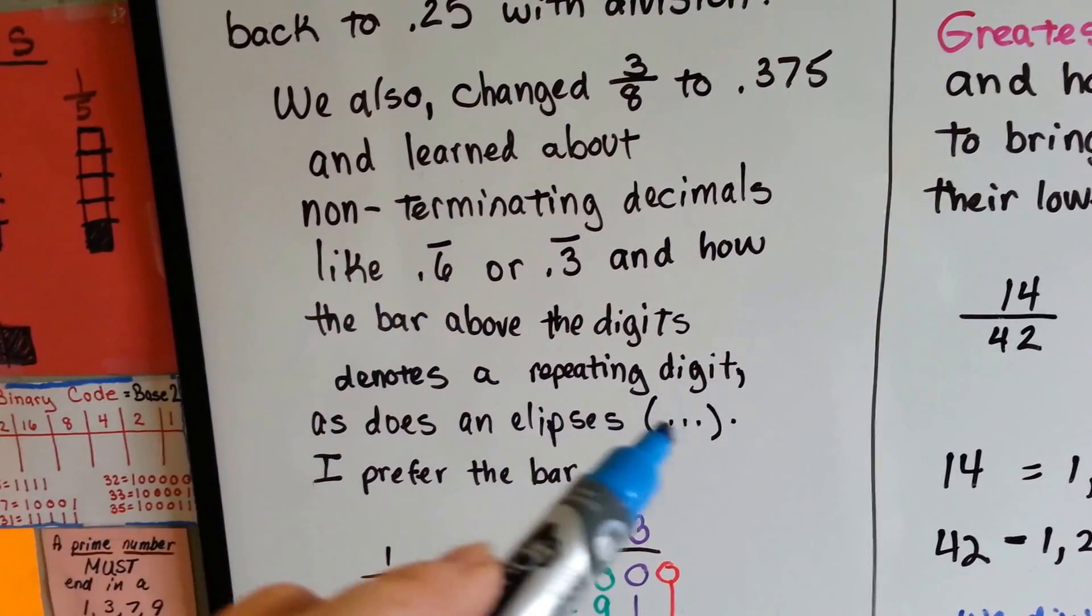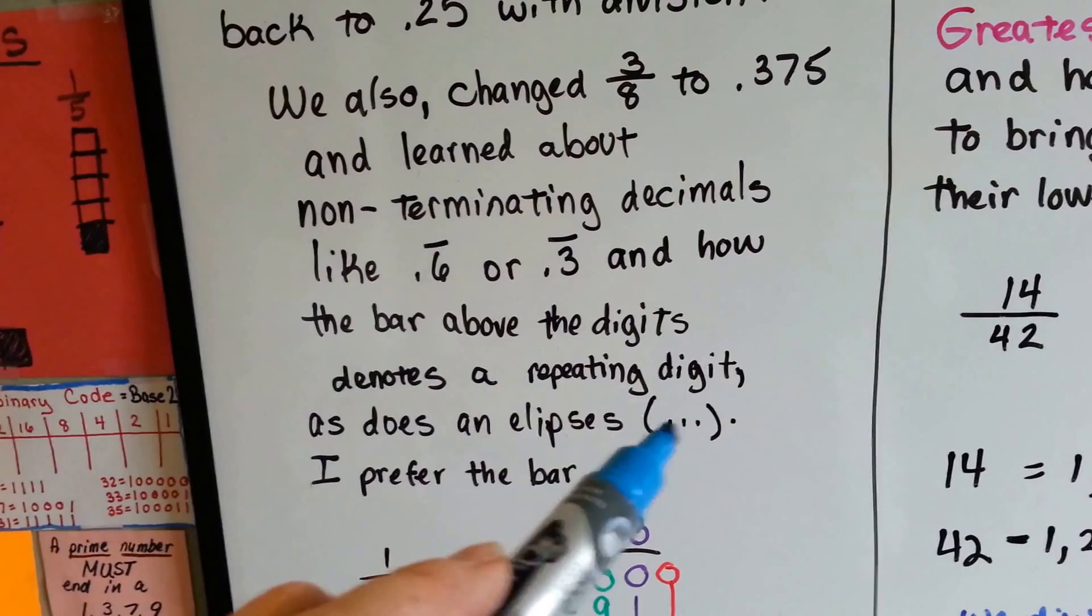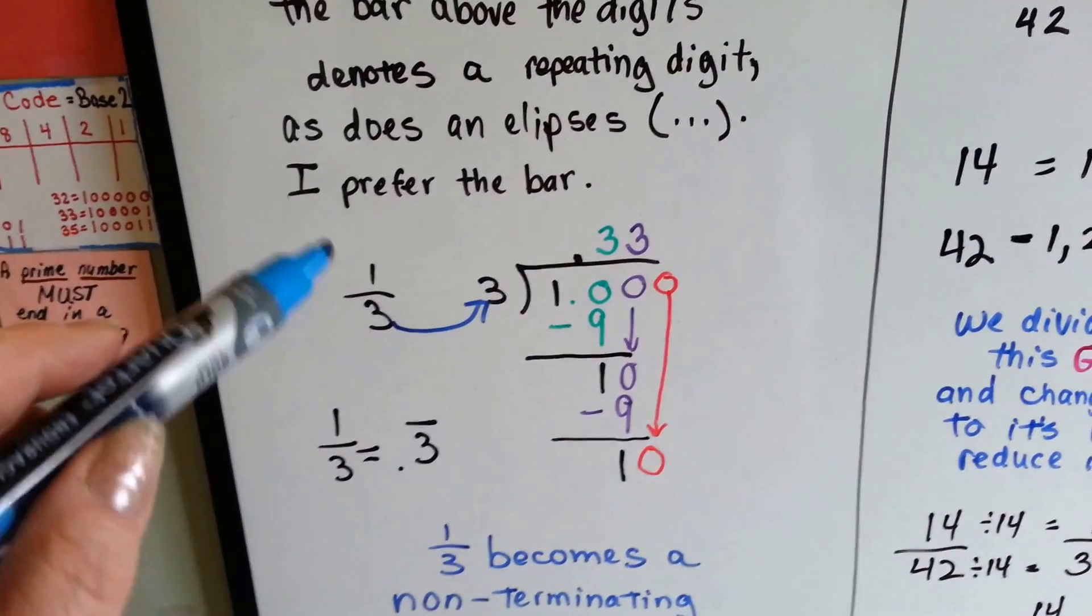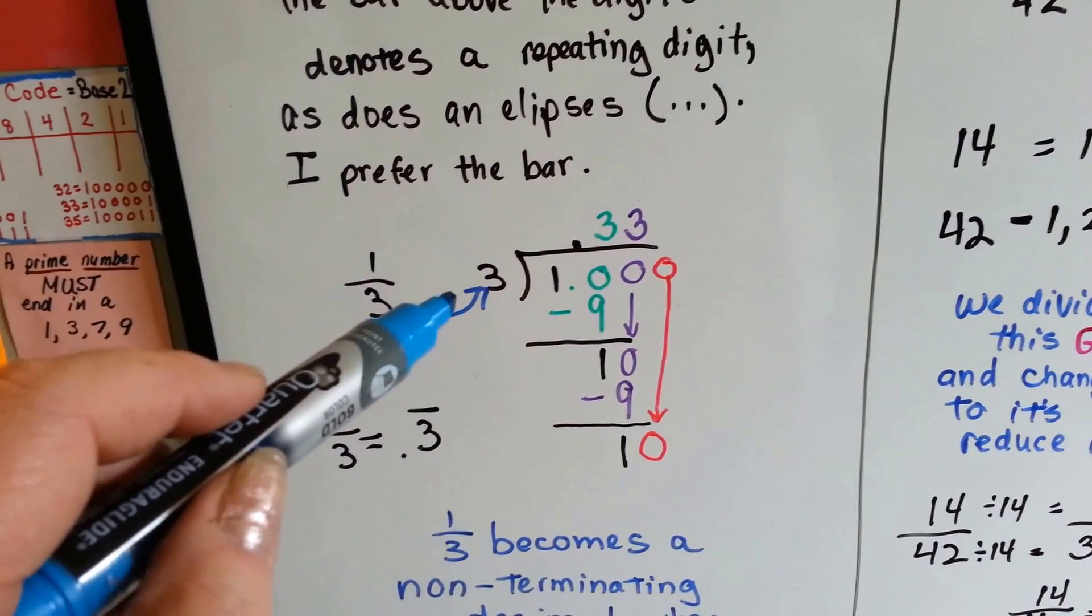I prefer the bar because I don't like confusing the ellipsis dots with the decimal points. So, we're going to go over what we did, one-third as a decimal.